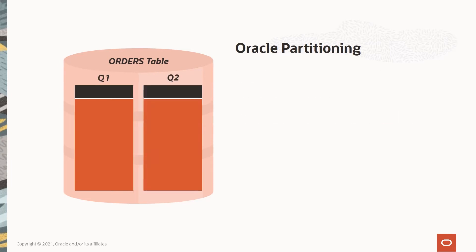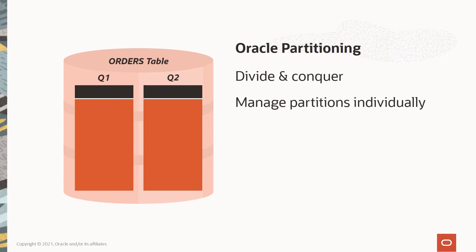By segmenting the table into smaller chunks — for example by quarter — we're able to divide and conquer. That means our DBA can manage each partition independently for administrative tasks, making them easier and faster. From a query perspective, our database optimizer uses the partitions to quickly eliminate data that isn't needed.